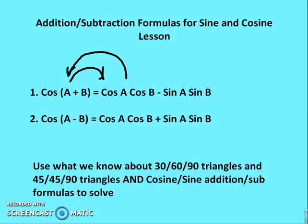We're going to use what we know about 30-60-90 triangles and 45-45-90 triangles in regards to cosine and sine functions, in order to figure out the sine or cosine of an angle measure that you might not otherwise know.